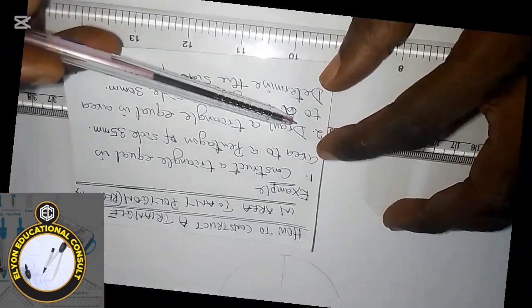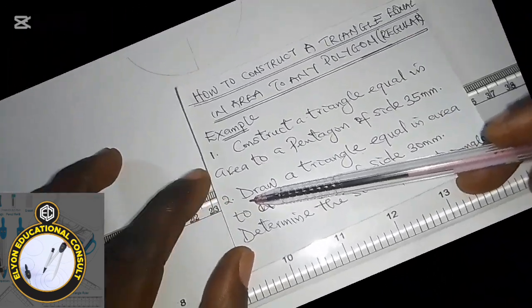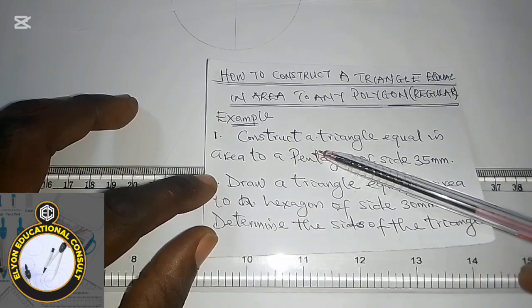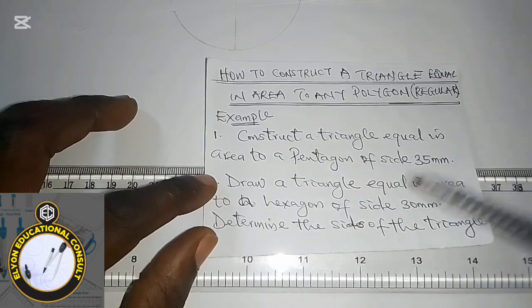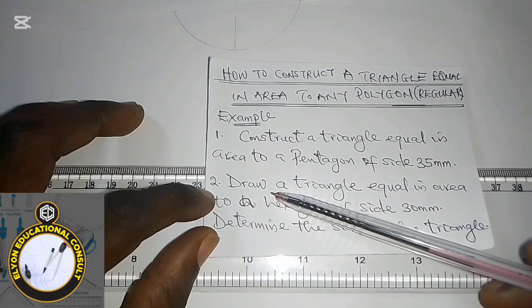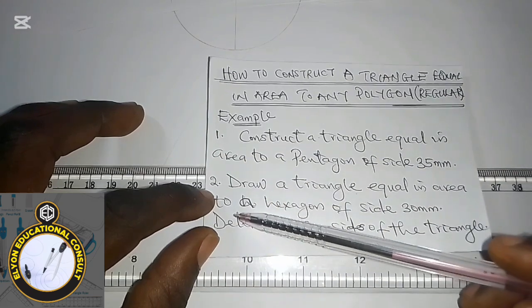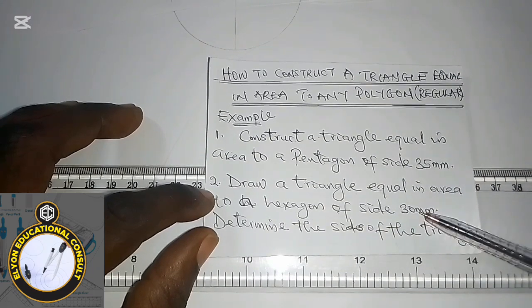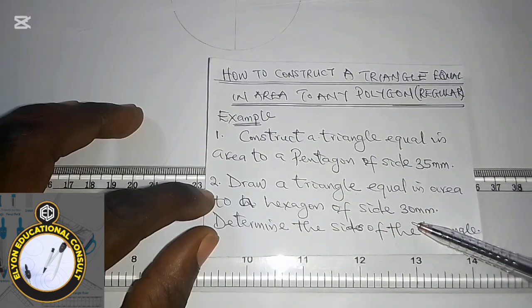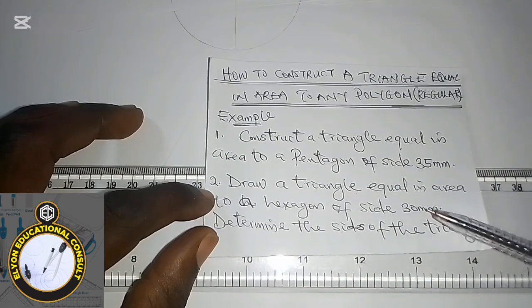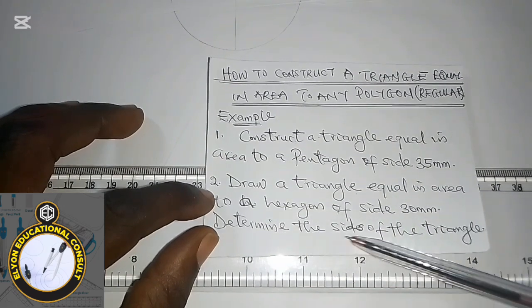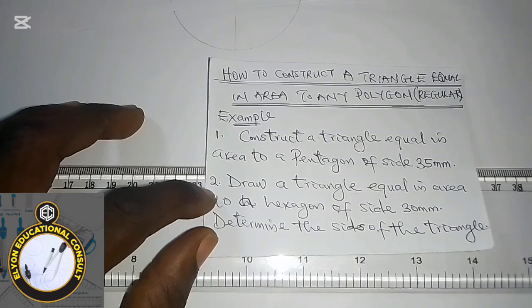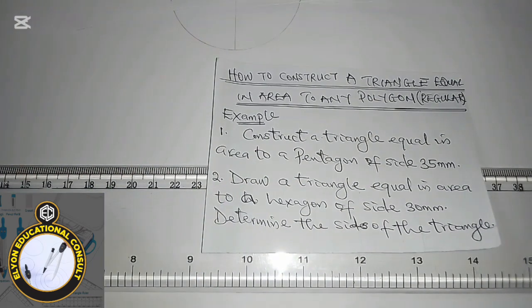Welcome back. In this video we will quickly be solving this question — the second question. We've done the first in my previous video, so you can check on that. For this second one, the question says: draw a triangle equal in area to a hexagon of side 30 mm. Of course it's a regular hexagon. The question also says to determine the sides of the triangle.